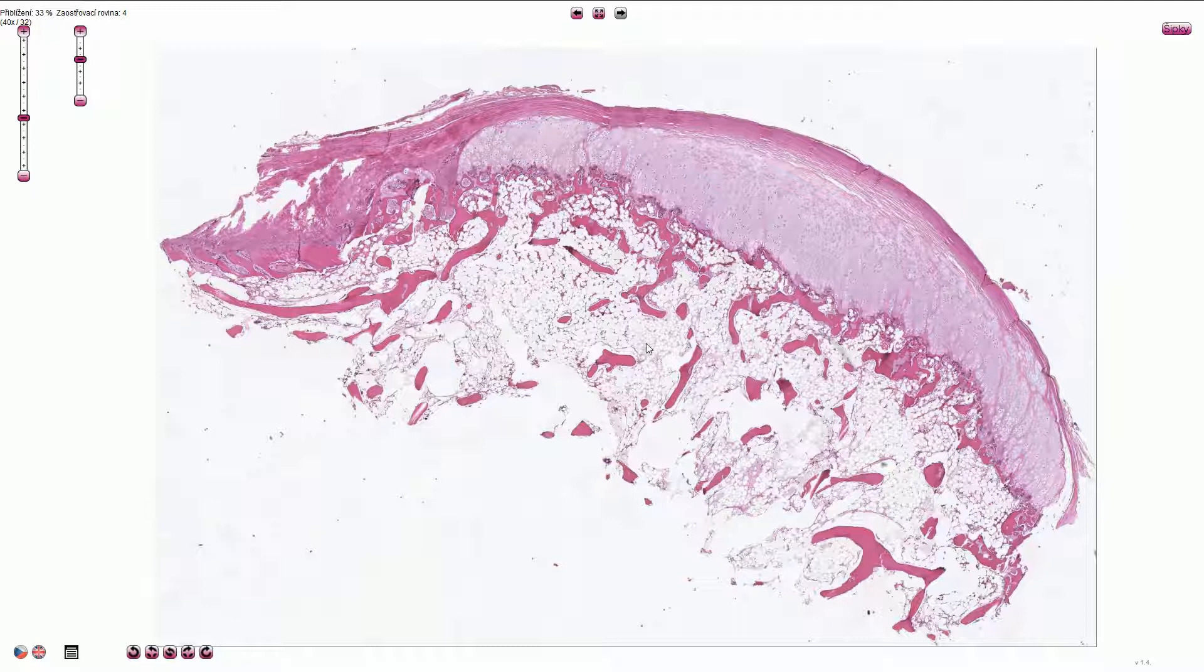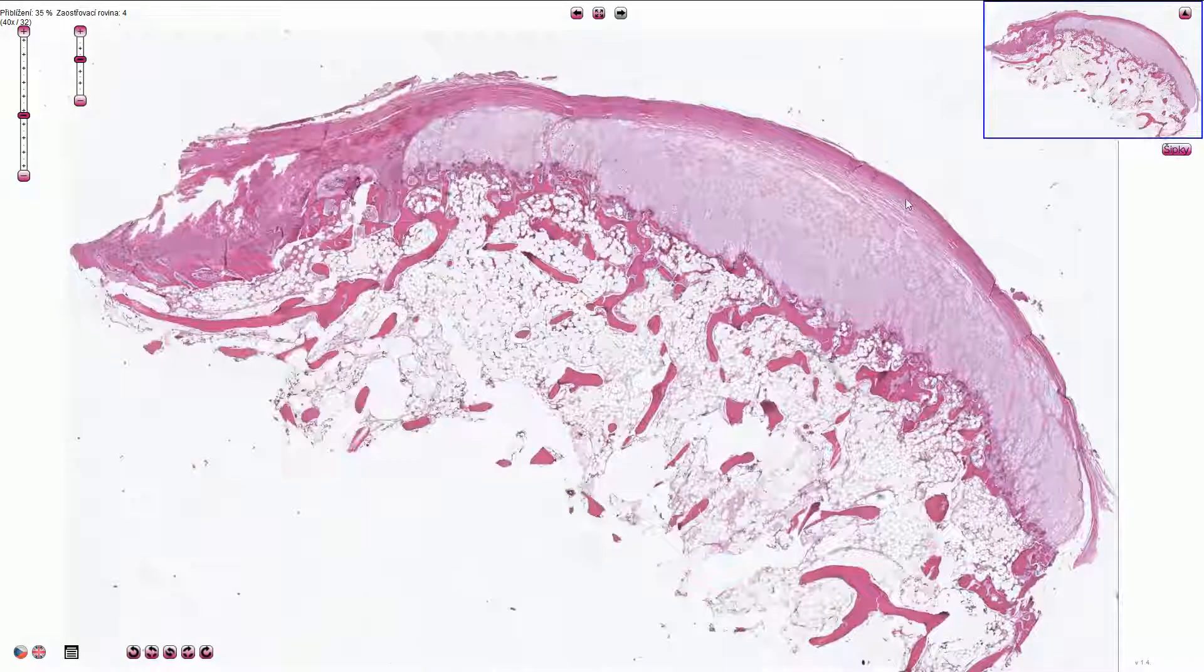It is composed of cartilage which creates a cap-like structure. On the surface we can find the fibrous layer which is perichondrium, and it is composed of dense fibrous tissue.